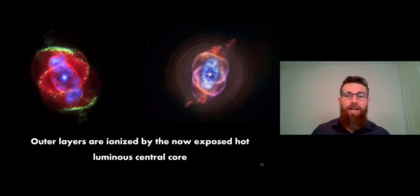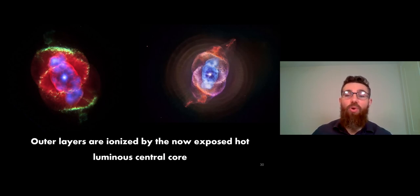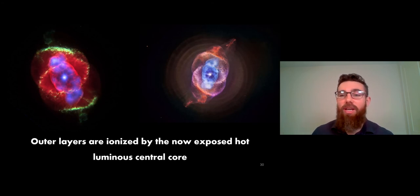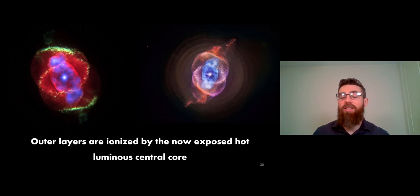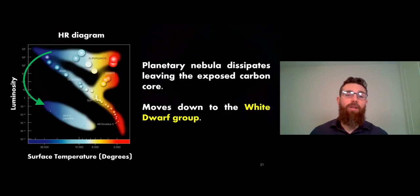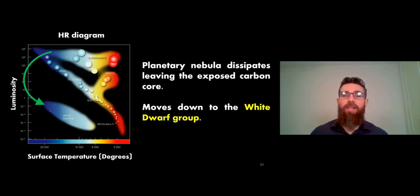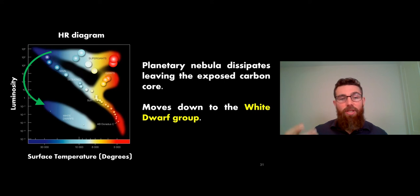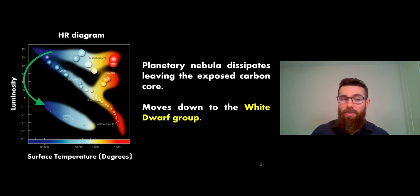The next stage is from the red giant phase on the upper right of the HR diagram to a planetary nebula across the top. Those outer layers are lost and then illuminated by the now-exposed hot core. It's worth noting these have nothing to do with planets - it's purely down to historical observations of what they were thought to look like when first observed. These outer layers are ionized by the exposed central core - the very hot core illuminates or ionizes the outer layers, giving these beautiful structures that emit their own wavelengths and become quite luminous, while the surface temperature increases because the central core is now visible.